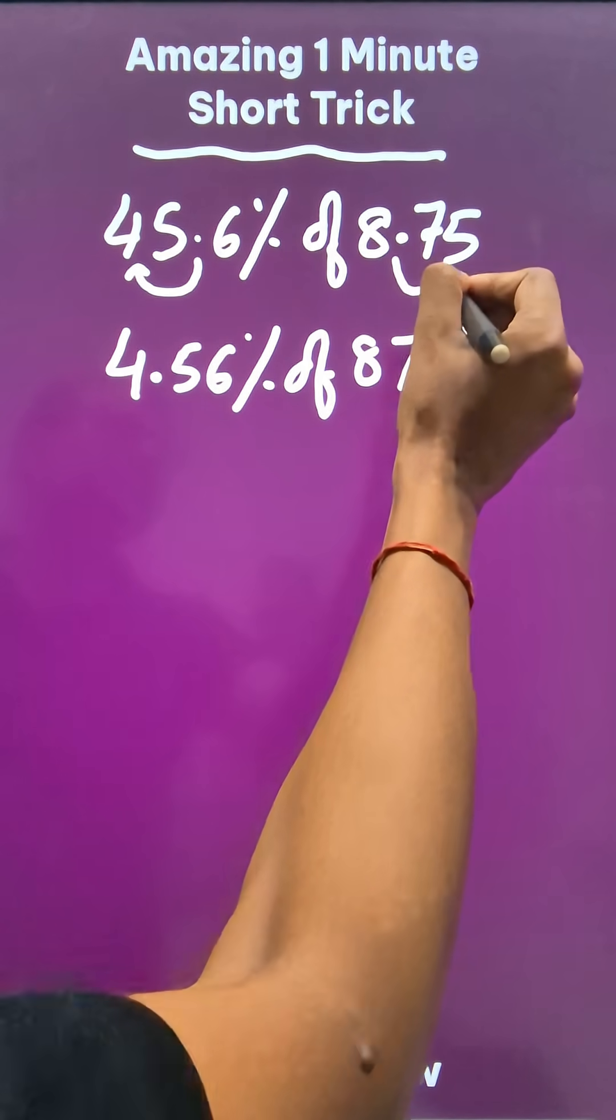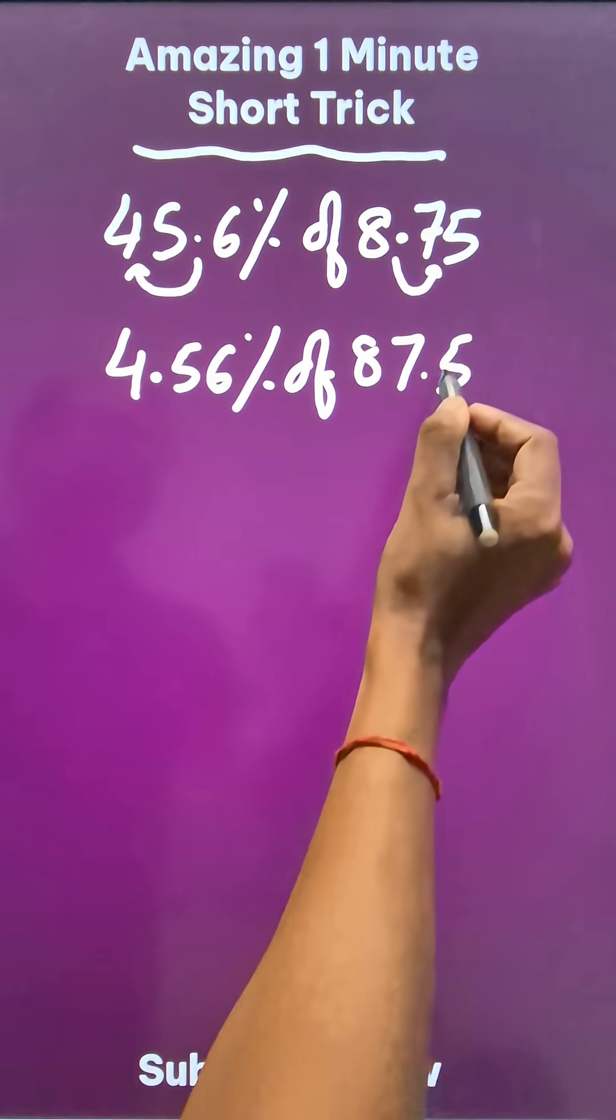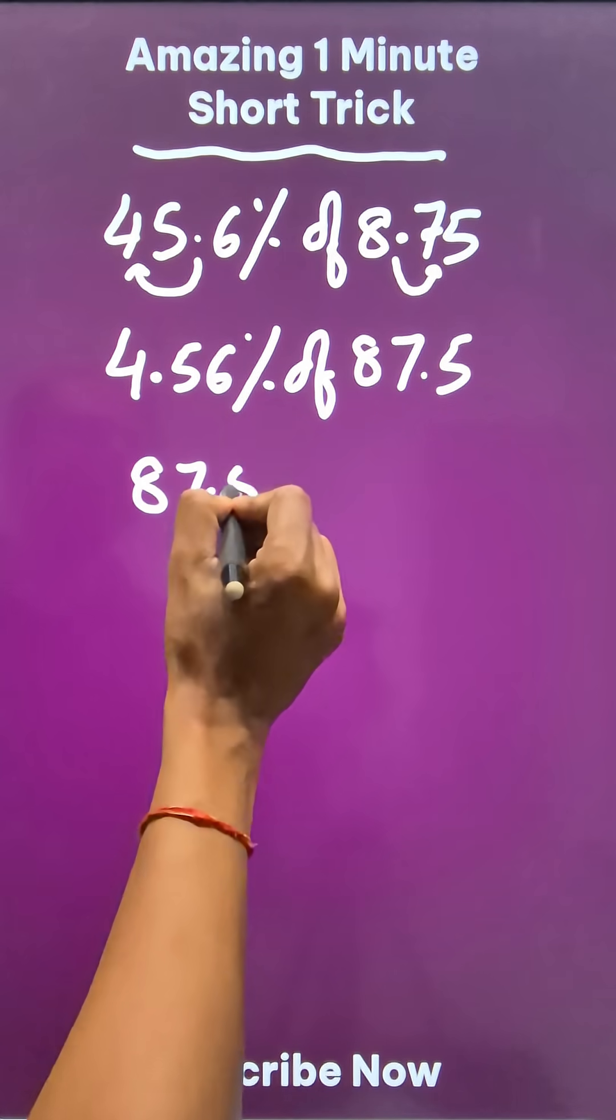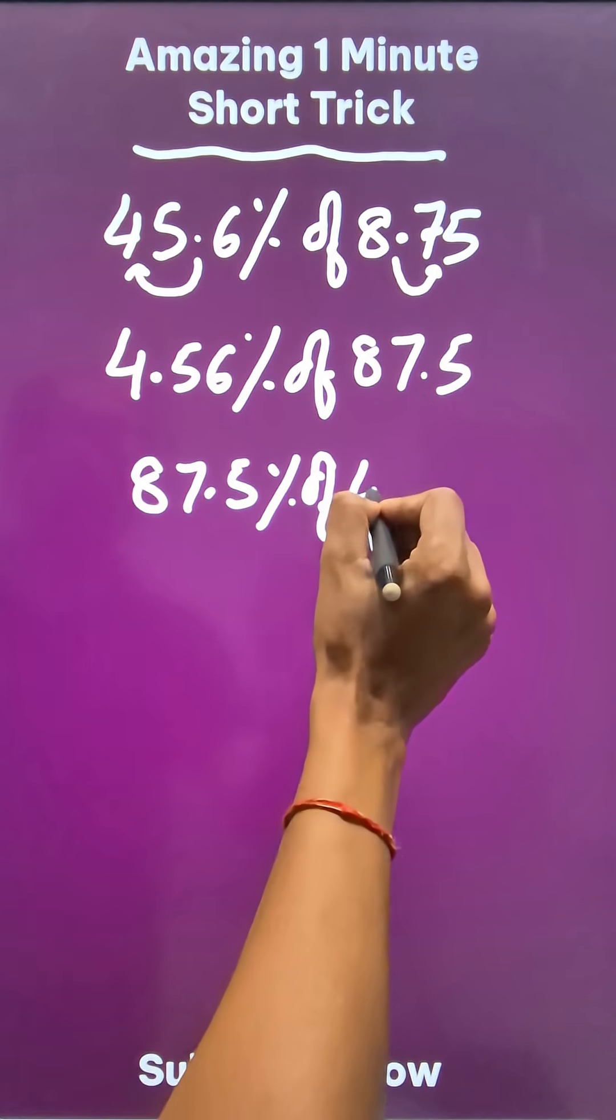So the decimal shifts here to 87.5, and now I will swap the percentage sign. So 87.5% of 4.56.